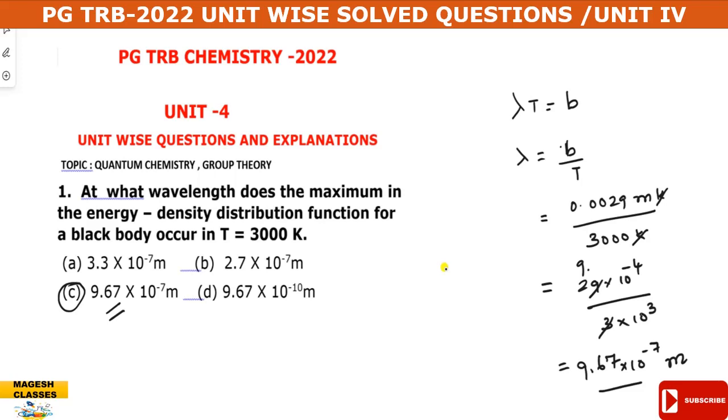So from Wien's displacement law, lambda multiplied by temperature equals the Wien's constant.